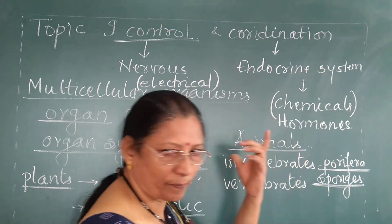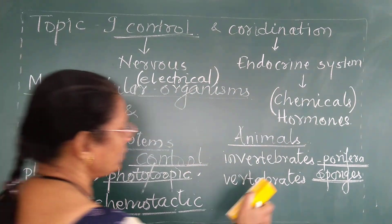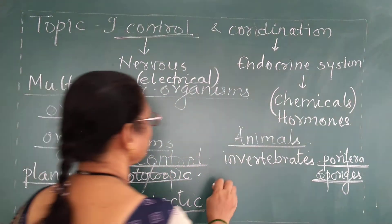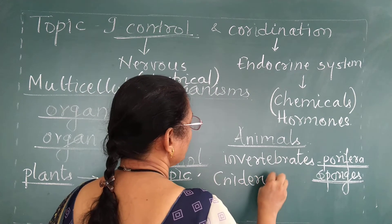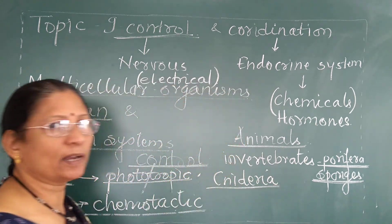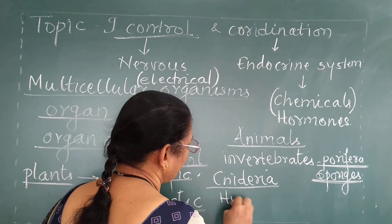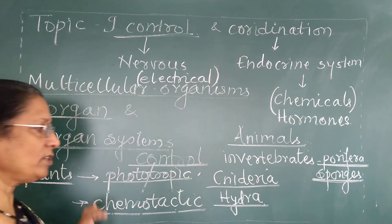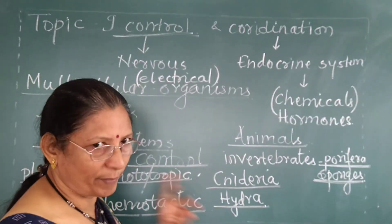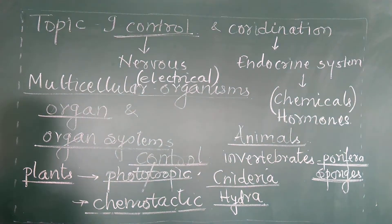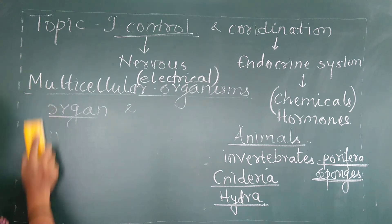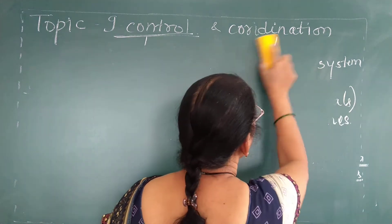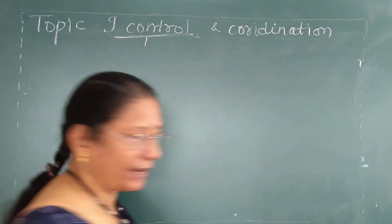After Phylum Porifera, the next phylum is called Cnidaria. The example of Phylum Cnidaria is hydra. From hydra onward, the nervous system starts evolving and developing. We are going to study about the nervous system in hydra.